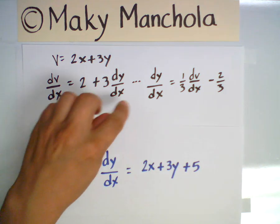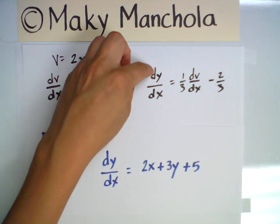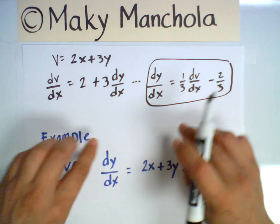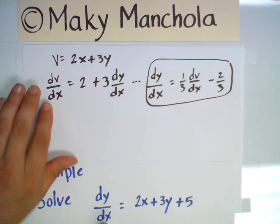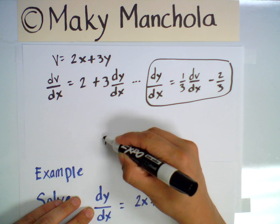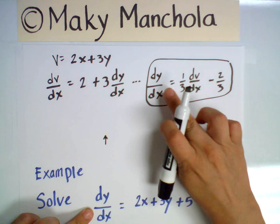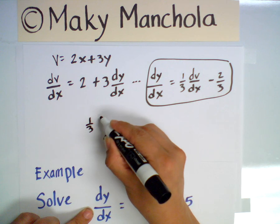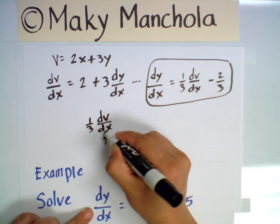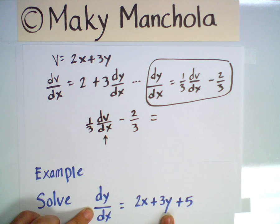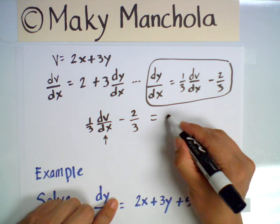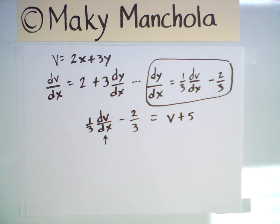Now we take that result for dy/dx and replace dy/dx in our original problem. The left-hand side becomes (1/3)(dv/dx) minus 2/3. The right-hand side becomes v plus 5. We need to solve this equation, and since we know it is separable, we proceed to separate the variables.